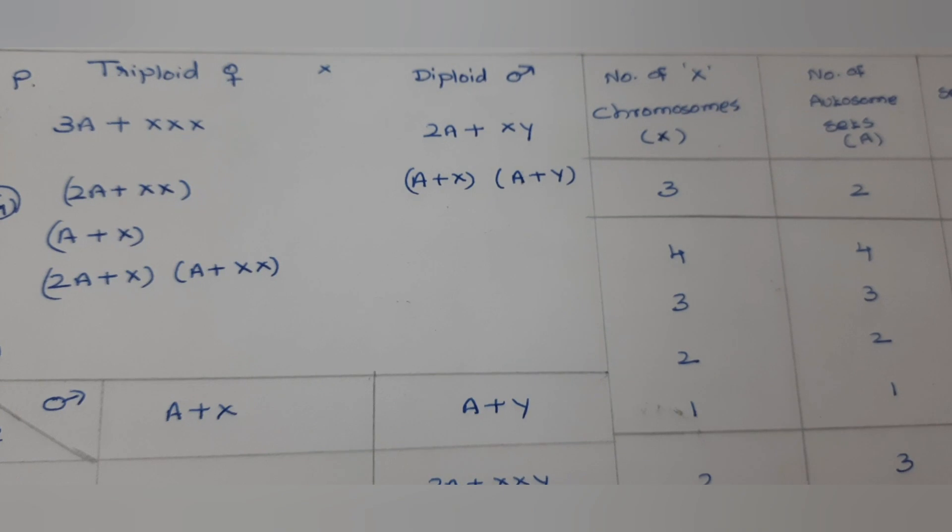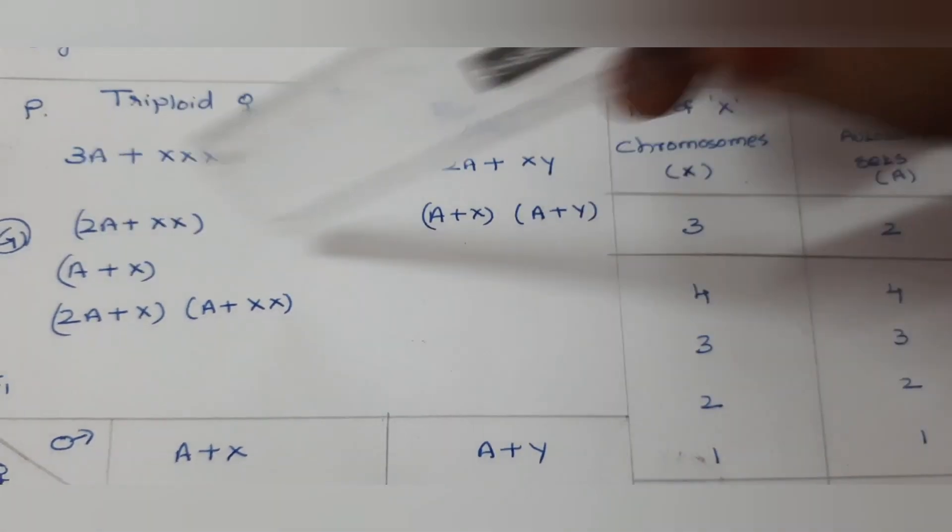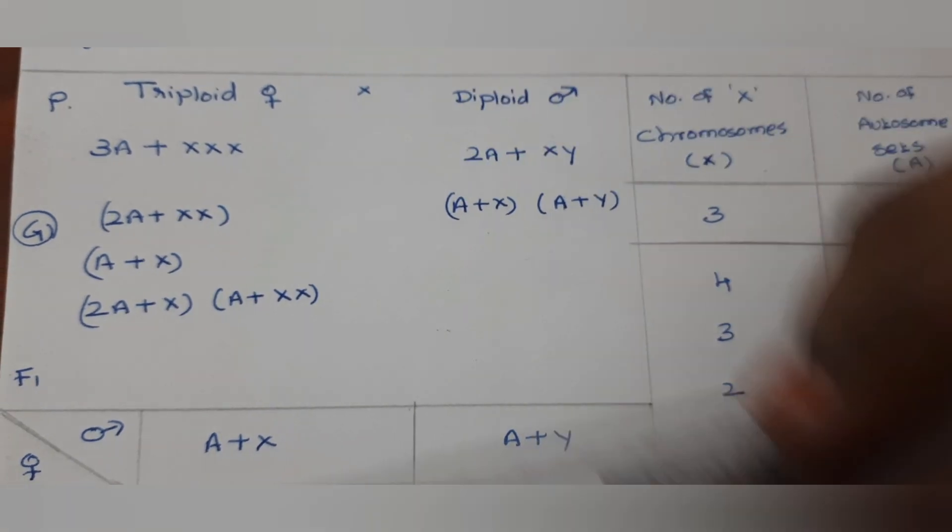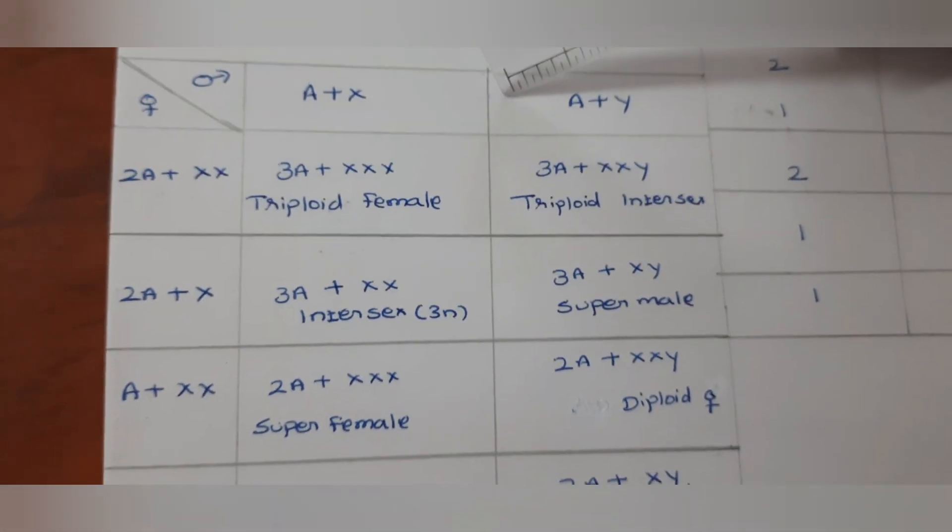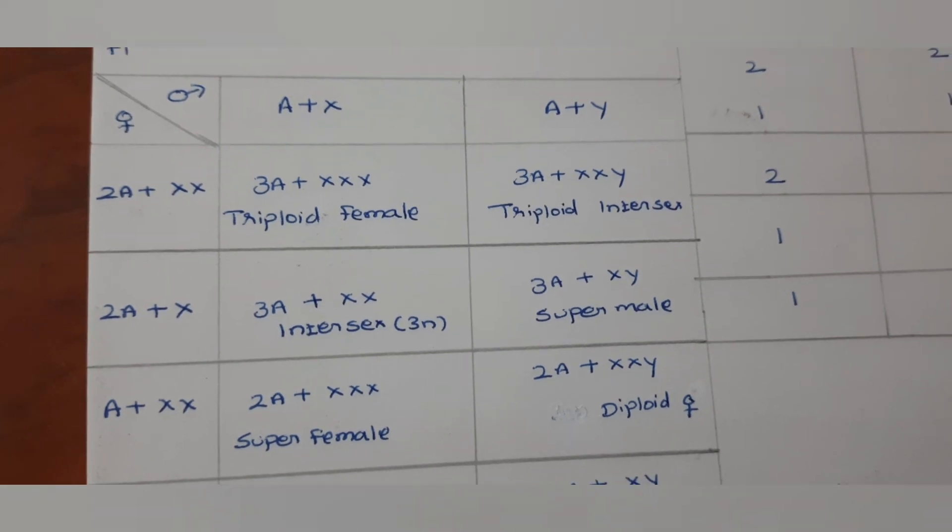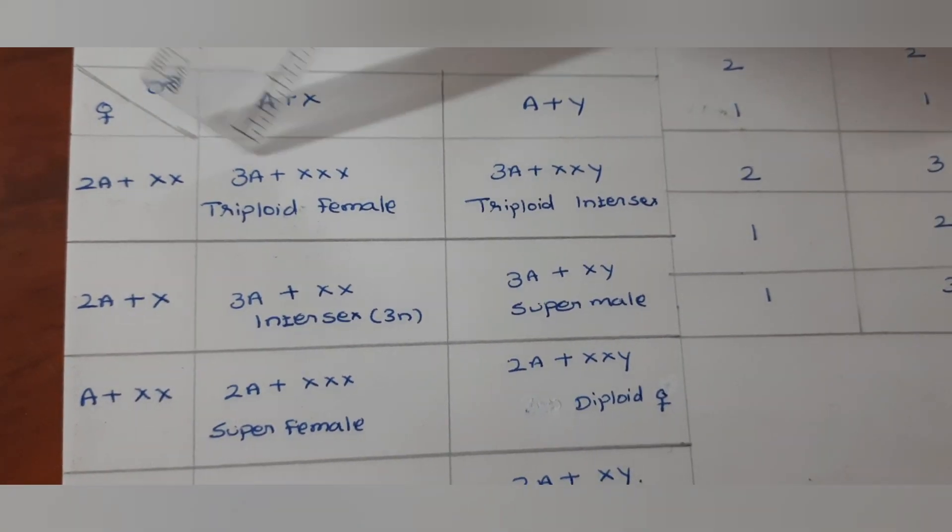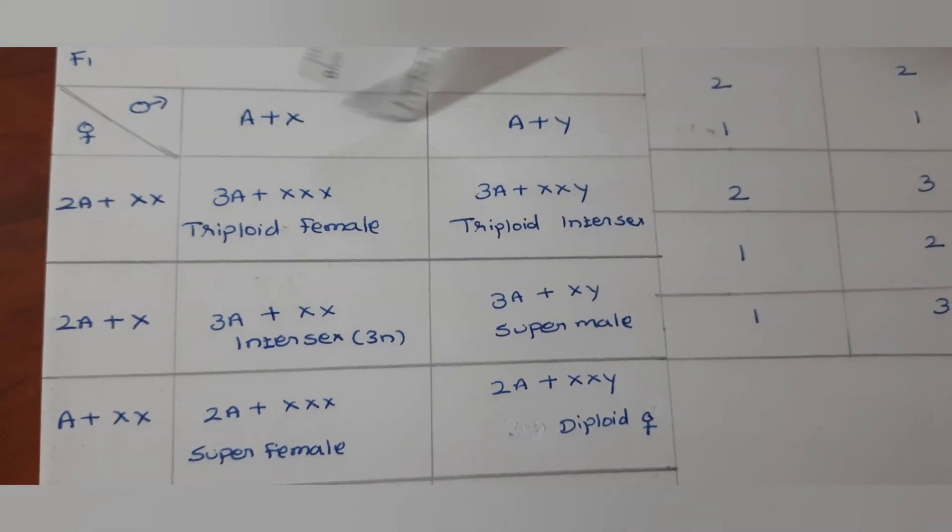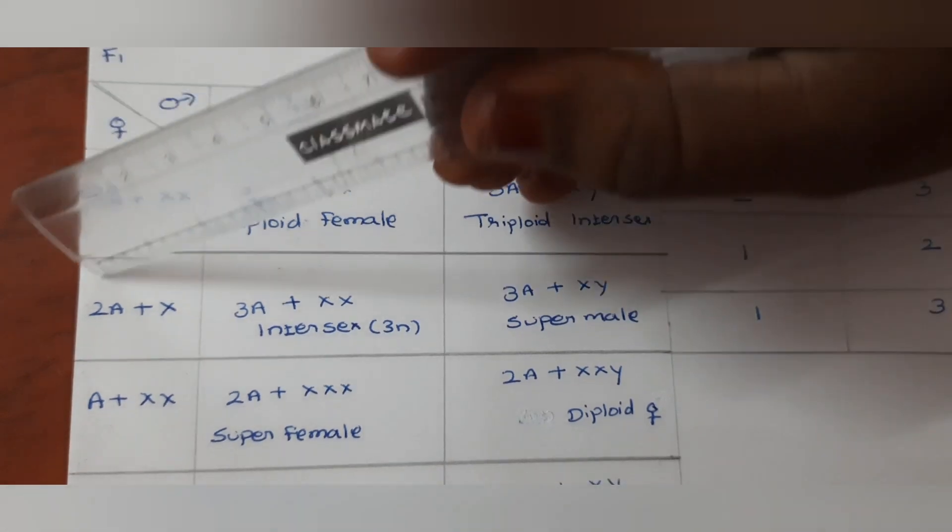Now let you make the cross between these gametes of female and male. You can put one square checker board, that is called a Punnett square board. You already studied in 10th standard as well as in botany related to monohybrid cross and dihybrid cross. By applying the same checker board, here this row is male and this row completely female.